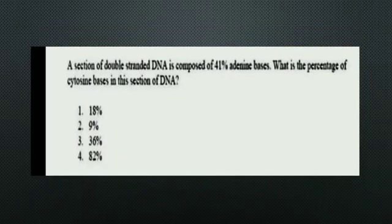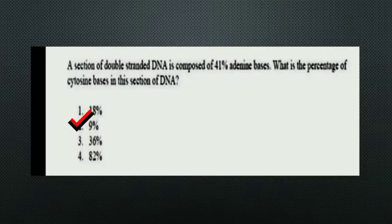The next question: A section of double-stranded DNA is composed of 41% adenine bases. What is the percentage of cytosine bases in that section of DNA? The right answer is Option 2, which is 9%.